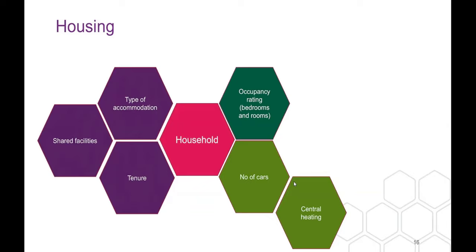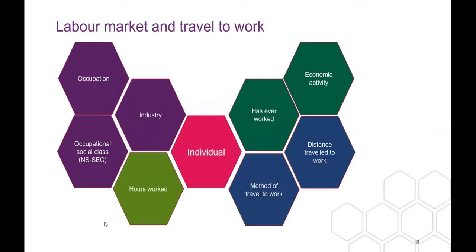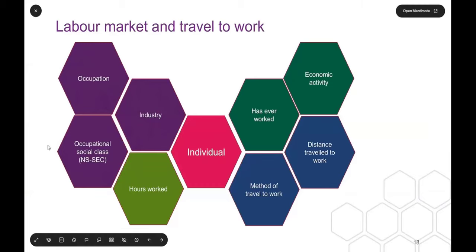Housing deprivation is based on not having enough bedrooms, sharing facilities, or lacking central heating. For dwelling spaces, census enumerators go out and estimate places that are unoccupied, so there's a flag saying whether a place is occupied, and then the number of bedrooms and rooms.